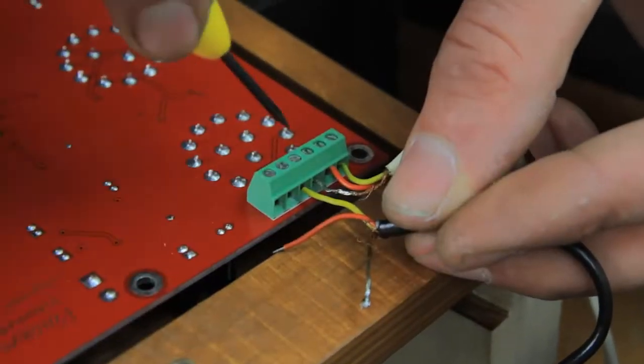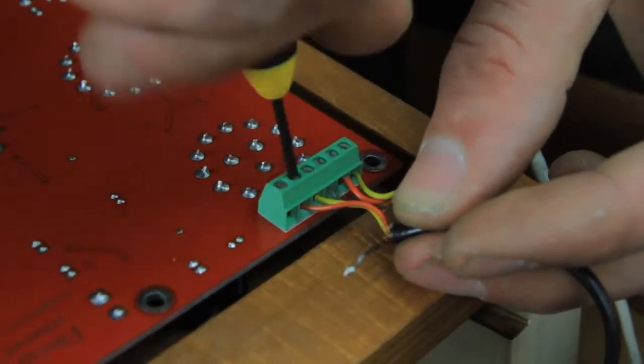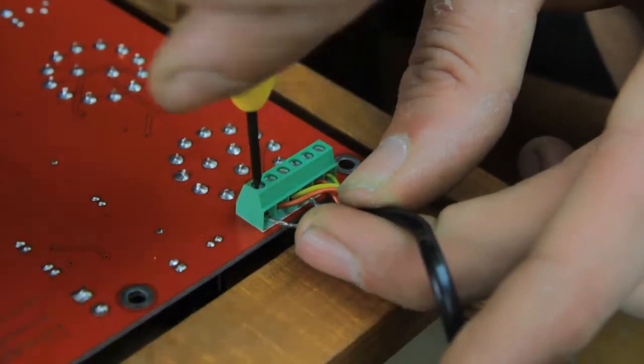Now install the bottom pickups wire, again, following the same orientation, yellow, red, and the shield. A wiring diagram is available on the website.